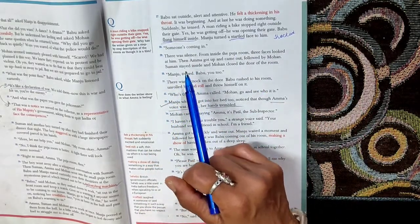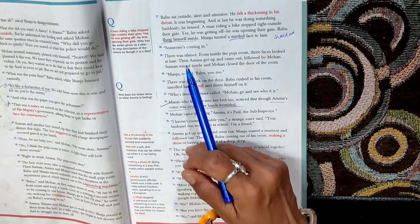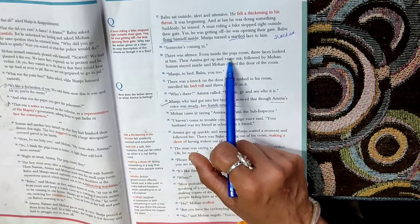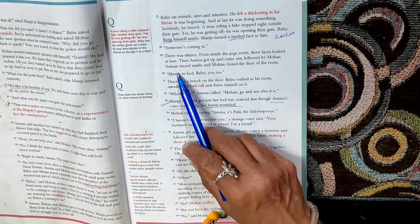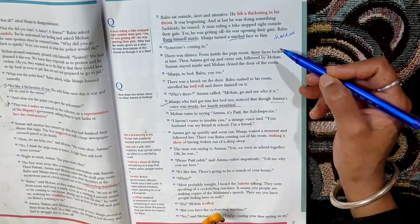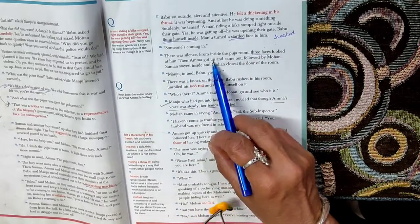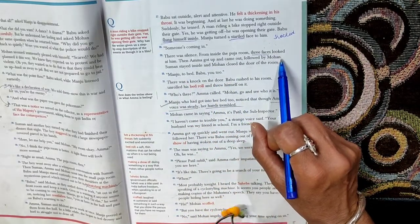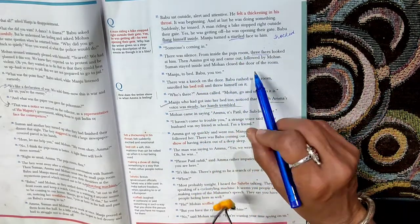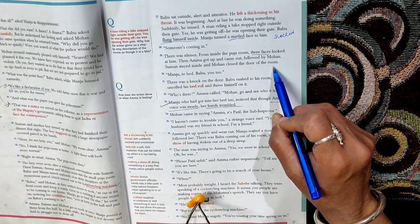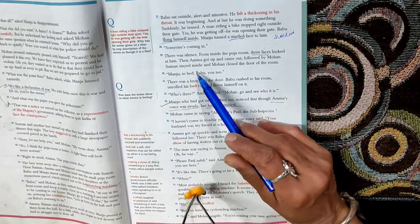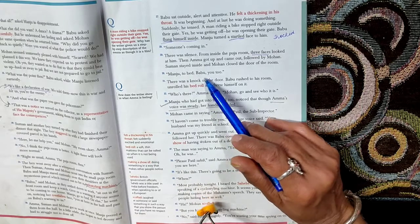Someone is coming in. He is giving information to the three of them in the puja room and Manju that somebody is coming in. There was silence. From inside the puja room, three faces looked at him: Suman, Mohan and Amma. Then Amma got up and came out, followed by Mohan. Suman stayed inside the puja room and Mohan closed the door of the puja room. Manju to bed, Babu you too. Now this is Mohan instructing Manju and Babu to go to bed. Both of them should go to bed and sleep.